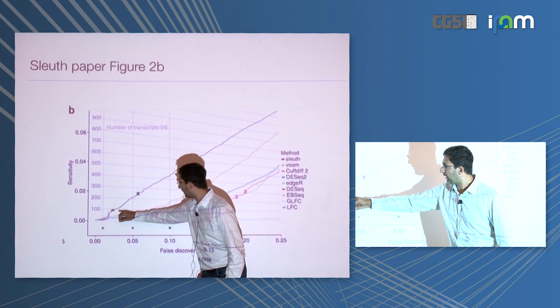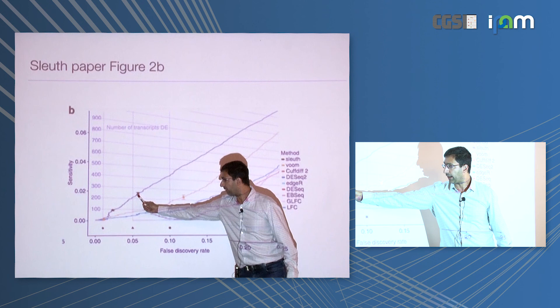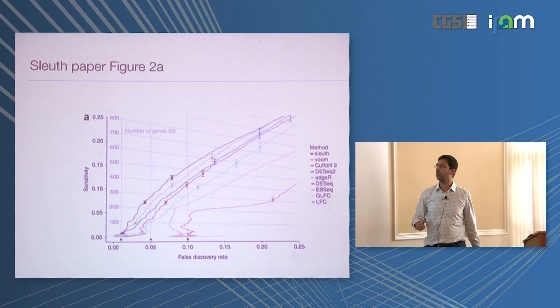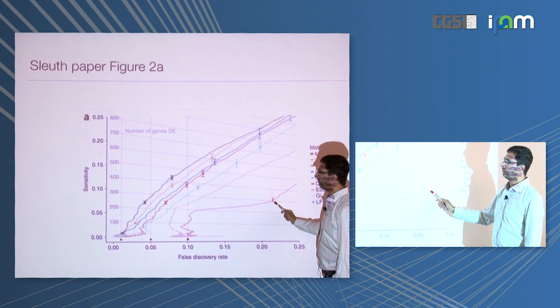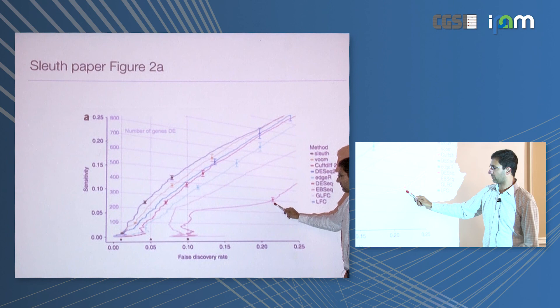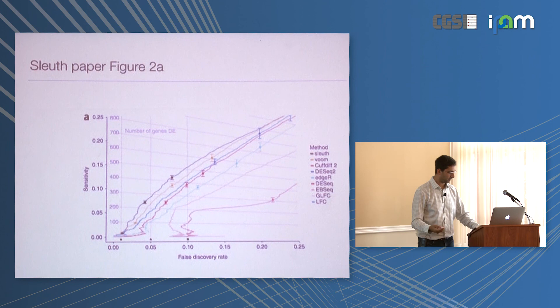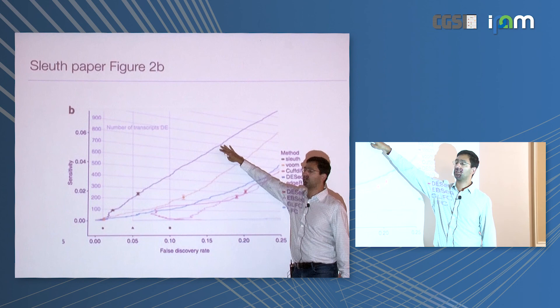The triangles and squares on the plot show where each program thinks its FDR is at thresholds of 0.01, 0.05, and 0.1, versus the true FDR on the x-axis. You can see that many programs are wildly off — they tell you your false discovery rate is 0.05 but it's actually something else. The message is that it really pays off to use bootstraps to assess the variance in your abundance estimate. You may now turn on your cellphones and laptops. Thank you.